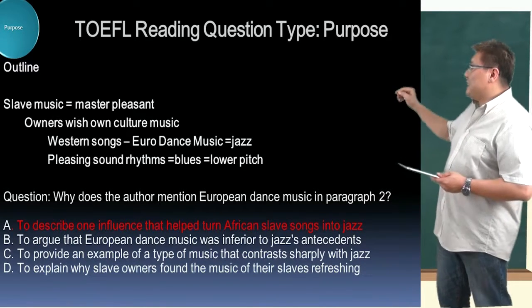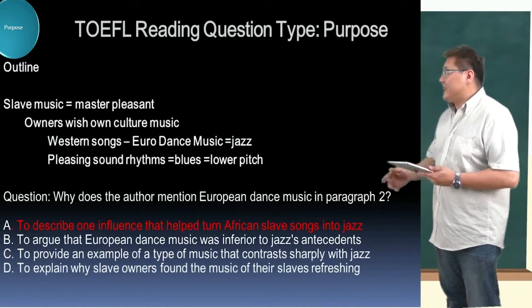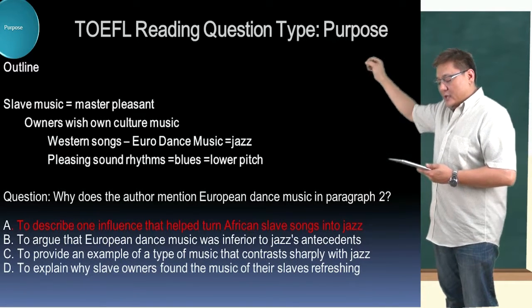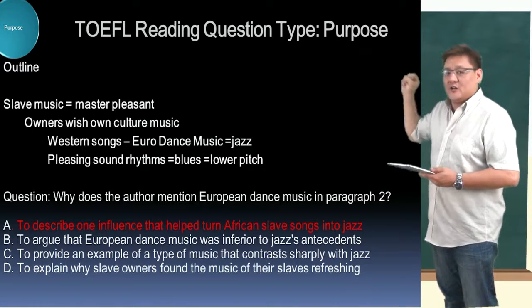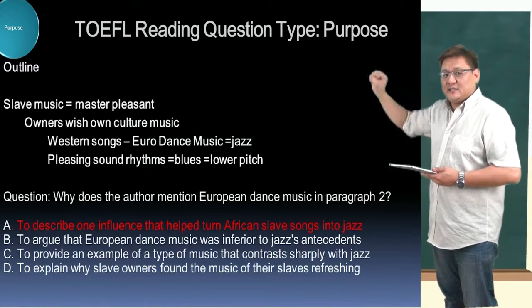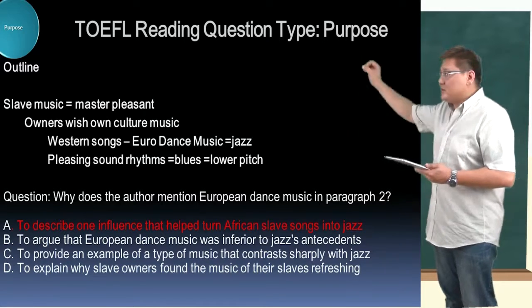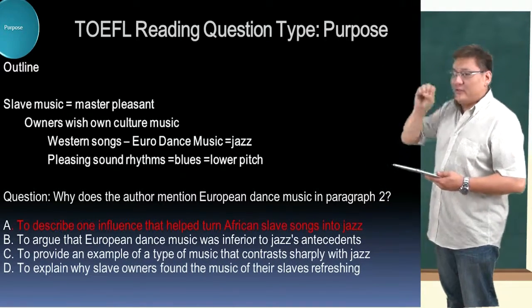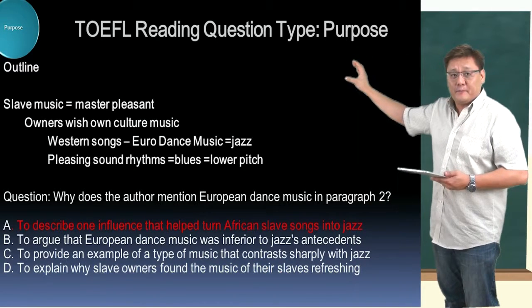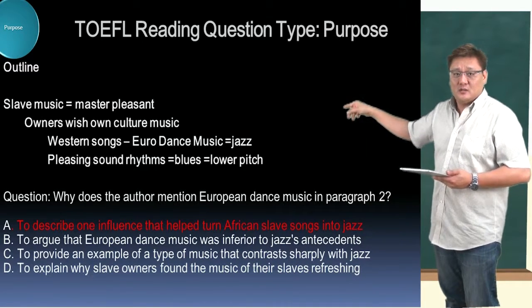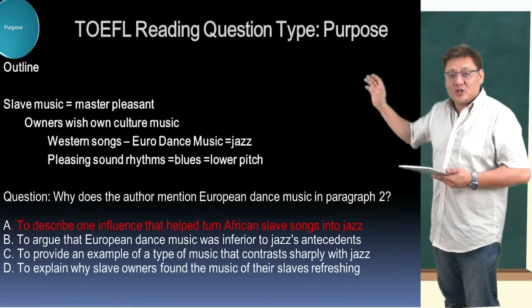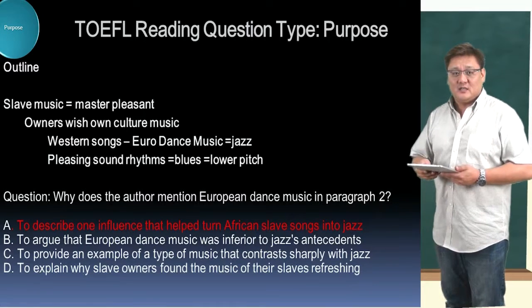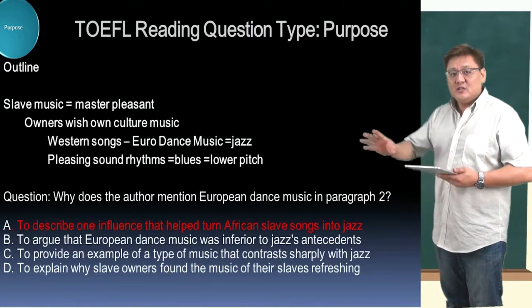This is a prime example of how TOEFL will take an example. Owners wished their own culture — and we know that's inferred as an influence. But the passage doesn't say the word 'influence.' If you're looking for the word 'influence' written explicitly, you won't find it. You're looking for the truth. Your notes point to the concept of influence even when the passage doesn't state it directly. That's why understanding the trend of influence is really important.